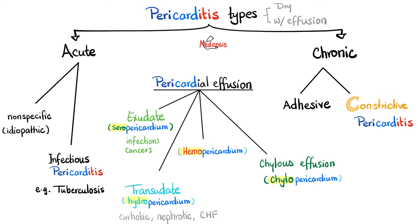We're talking about pericarditis. We can divide pericarditis types into dry or wet — with effusion — or into acute versus chronic. The acute type could be non-specific or idiopathic. Or it could be infectious, caused by viruses, bacteria, fungi, or parasites. Tuberculosis is the most common cause in developing countries, whereas viruses are the most common cause in developed countries. We also have chronic pericarditis, such as chronic adhesive pericarditis and chronic constrictive pericarditis, which we have covered before.